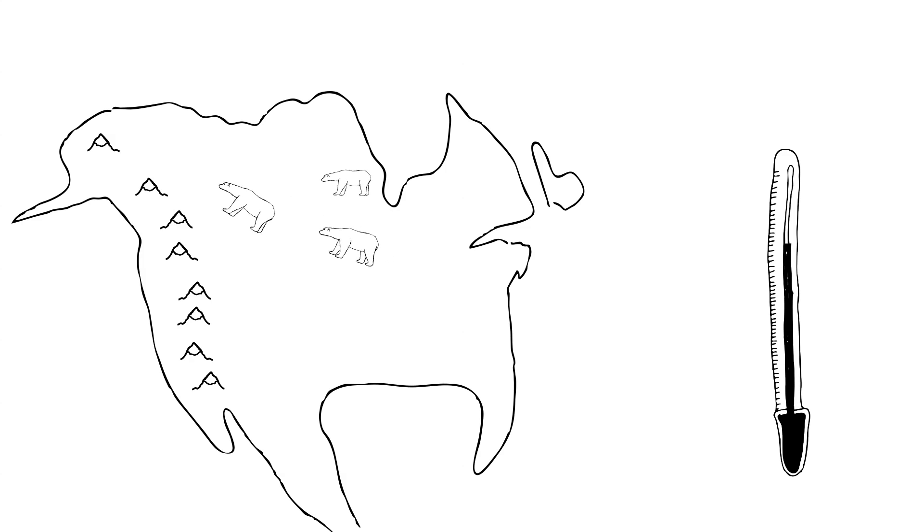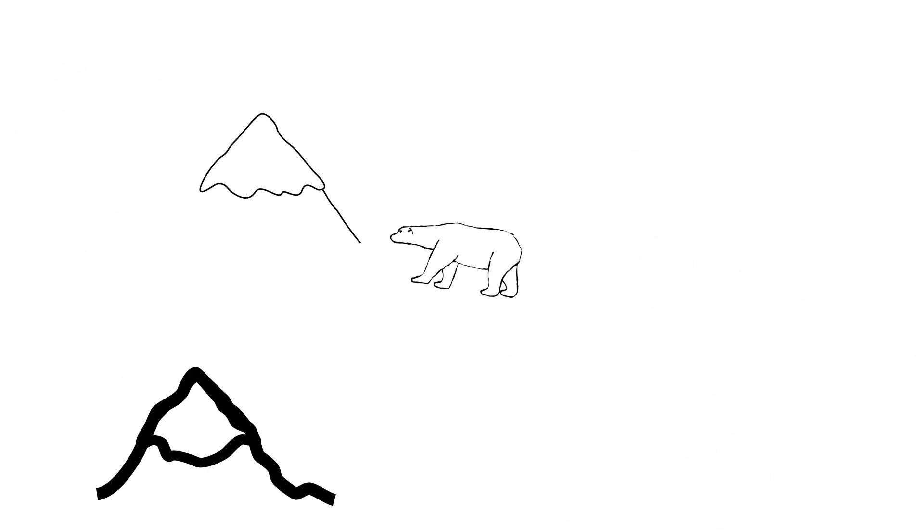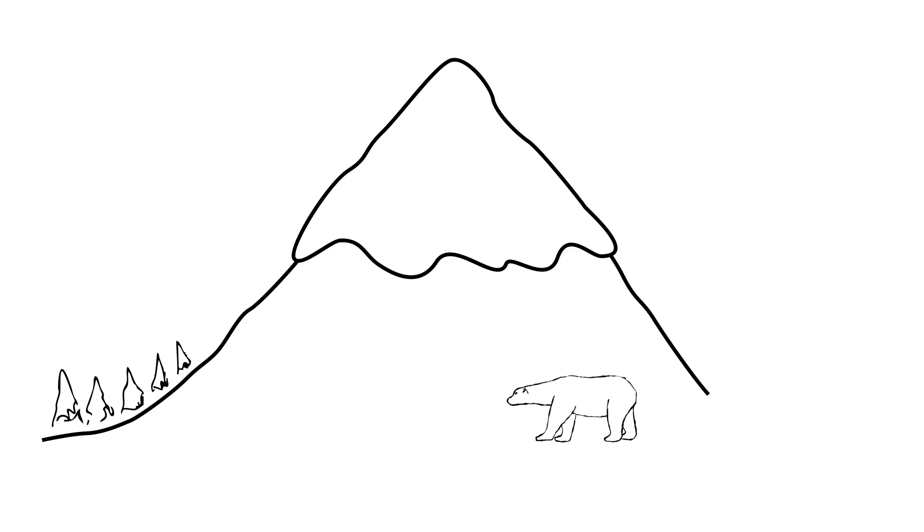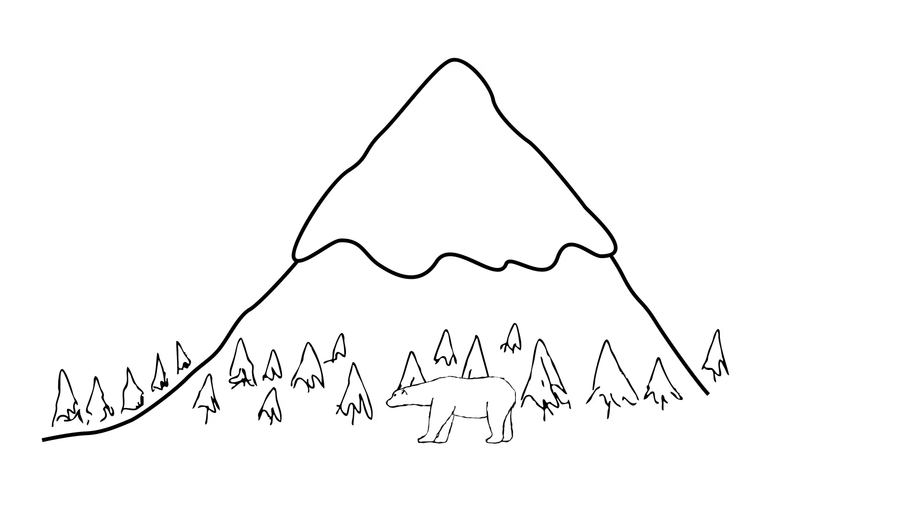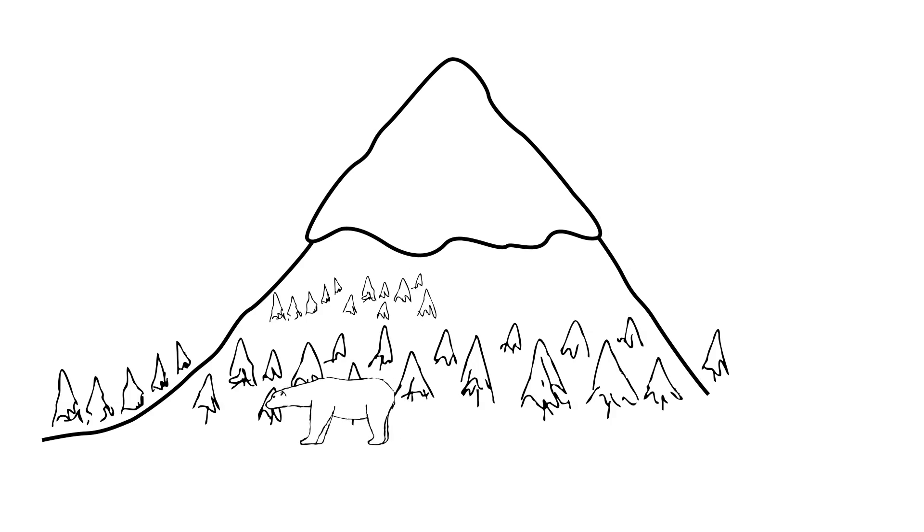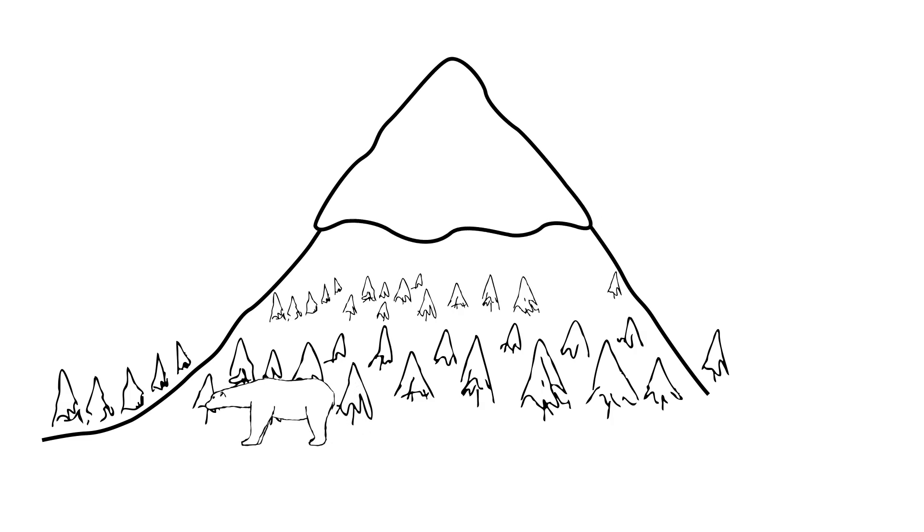Organisms can't move to cooler areas fast enough or adapt fast enough. Sure, some migratory animals can change their patterns of migration a bit, but what about the organisms that can't change? What about the ones that can't move? Entire forests come to mind. Think of mountain ranges. Forests will move further up the mountainsides, completely altering or displacing entire ecosystems as they go.